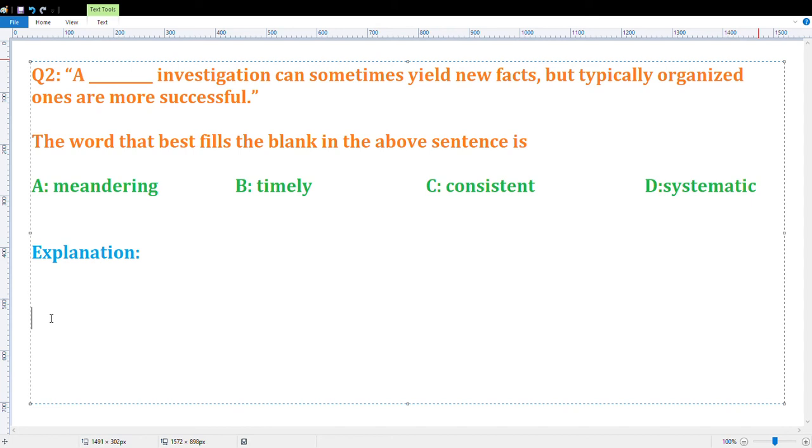Hello friends, in this video you will learn about one of the GATE aptitude questions. The question is: 'A blank investigation can sometimes yield new facts, but typically organized ones are more successful.' The word that best fills the blank in the above sentence is...